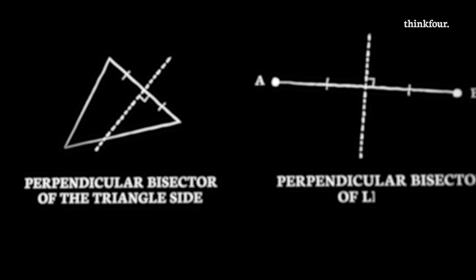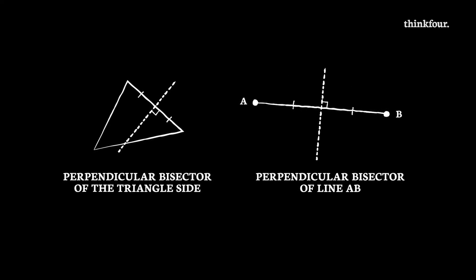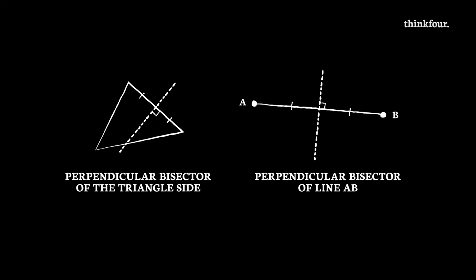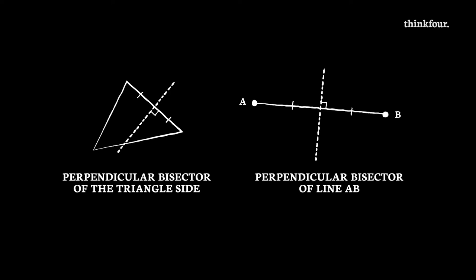A perpendicular bisector line could be on a triangle, or it could just be applied to any line segment. So we could see this question asked to do with a triangle, or just a line joining two points as shown. As you can see from the diagram with the triangle, the perpendicular bisector does not have to go through any of its vertices.